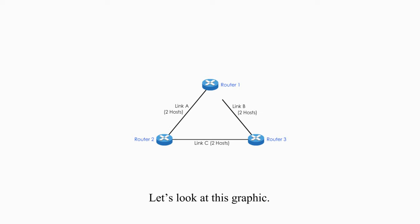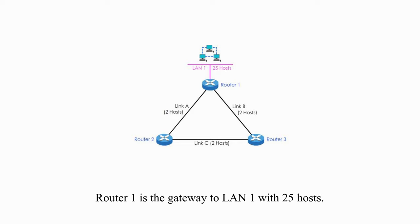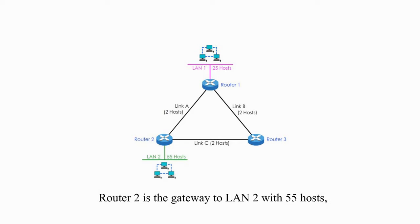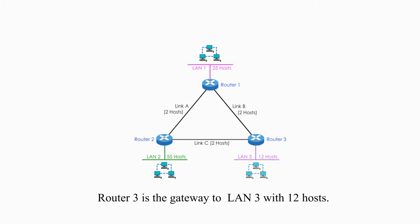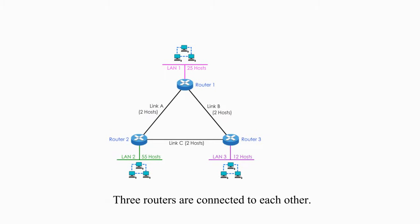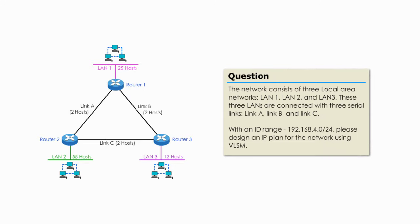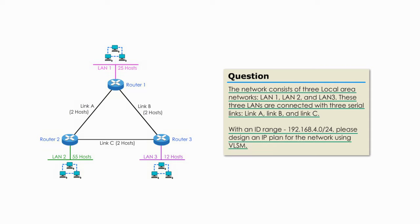Let's look at this graphic. Router 1 is the gateway to LAN 1 with 25 hosts. Router 2 is the gateway to LAN 2 with 55 hosts. And Router 3 is the gateway to LAN 3 with 12 hosts. Three routers are connected to each other. The network consists of three local area networks — LAN 1, LAN 2, and LAN 3. These three routers are connected with three serial links: link A, link B, and link C. With an IP range 192.168.4.0/24, please design an IP plan for the network using VLSM.